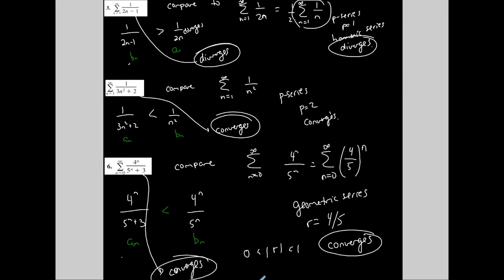To summarize the direct comparison test: if the series you choose to compare is larger than the series you're examining, you want it to converge for the test to work. If the series you choose is smaller, you want it to diverge. Otherwise, change what you're comparing it to, or use a different test to determine convergence or divergence.